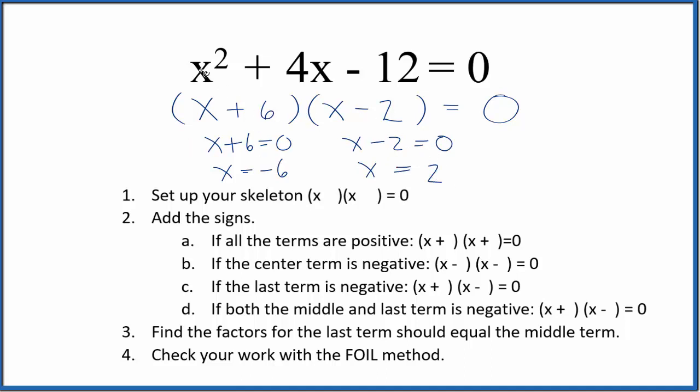What this means is if we put negative 6 in for x and do the math, this whole side here is going to equal 0. Likewise, we could put 2 in for x, do the math, it would equal 0. So these are the roots for the equation x² + 4x - 12.